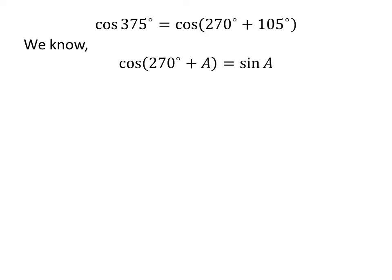We know the trigonometry identity cosine of 270 degrees plus A is equal to sine of A. The proof of this trigonometry identity is explained in the video appearing in the upper right corner, and the link is also given in the description section.